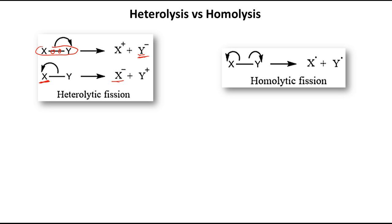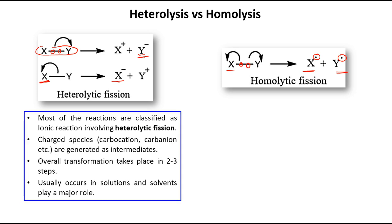In homolytic fission, one electron goes to X and another goes to Y, producing species with a single unpaired electron, denoted by a dot sign. Most reactions in organic chemistry are ionic reactions, which involve heterolytic fission because ionic reactions produce ions — cations or anions.